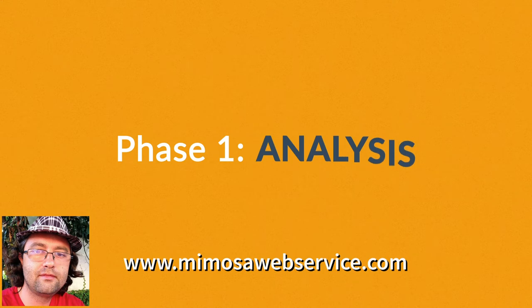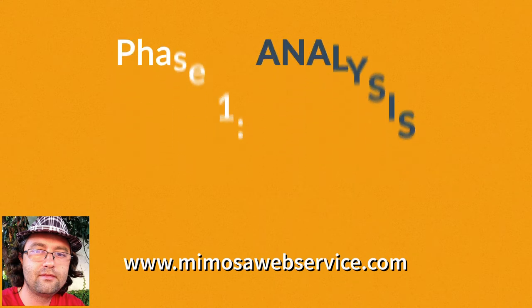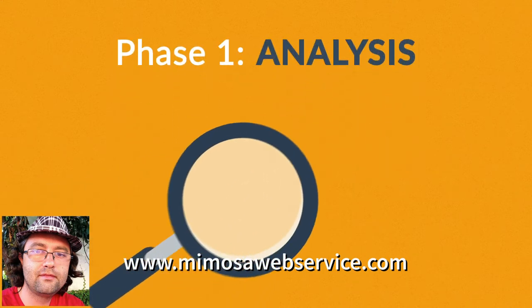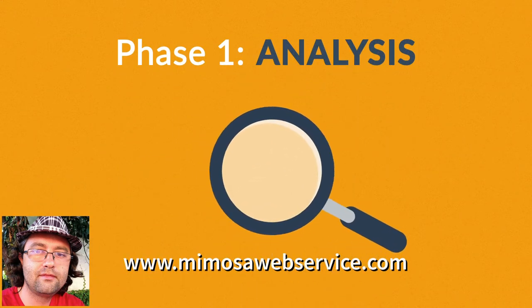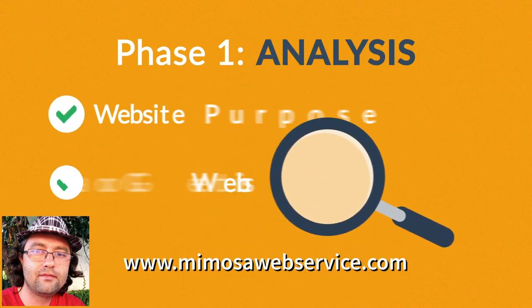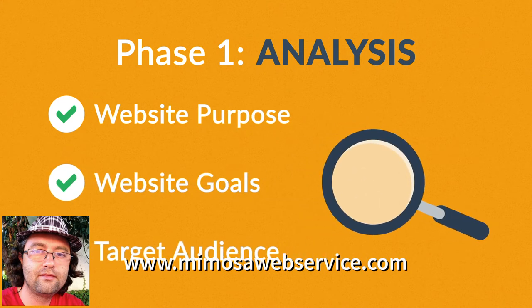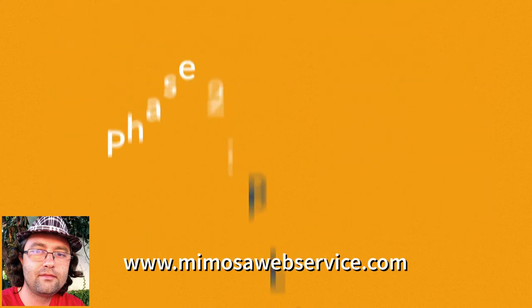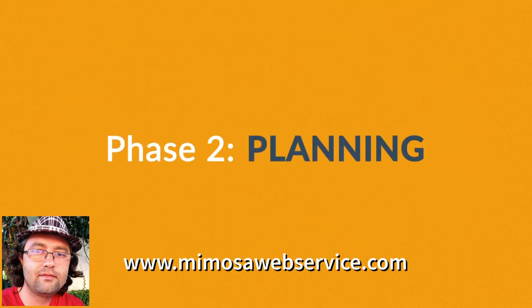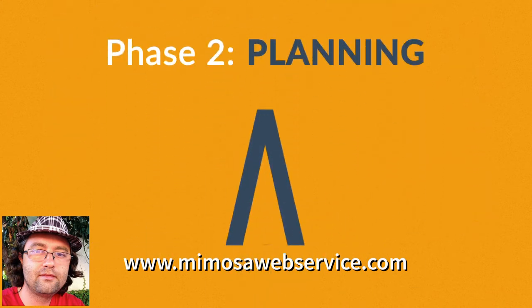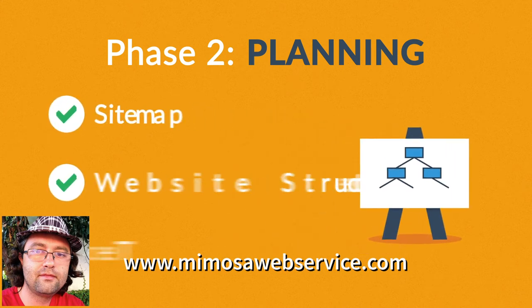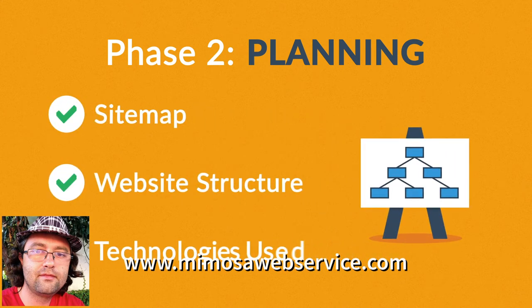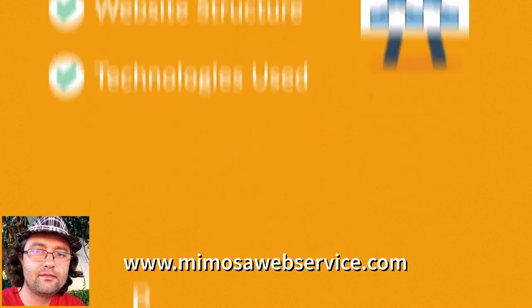Phase 1: Analysis. The first step is always about information gathering, identifying things like the website purpose, goals, and target audience. Phase 2: Planning. A plan includes a definition of the sitemap, structure, and technologies that we're about to use.